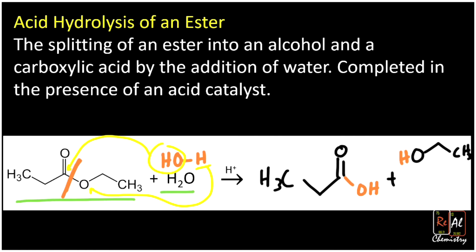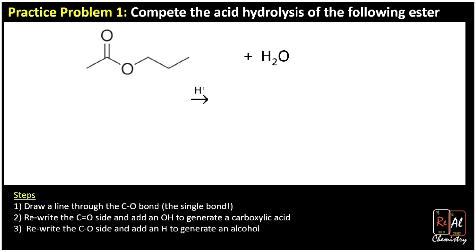All right, let's do a few practice problems and give you some steps. This says complete the acid hydrolysis of the following ester. Step one, draw a line through the CO single bond. So that's that special magical bond that connects the carboxylic acid half to the alcohol half. And now we're going to rewrite the C double O side and add an OH to generate our carboxylic acid. So we go up to our C double O bond and down, and we're going to add an OH. So that's one half.